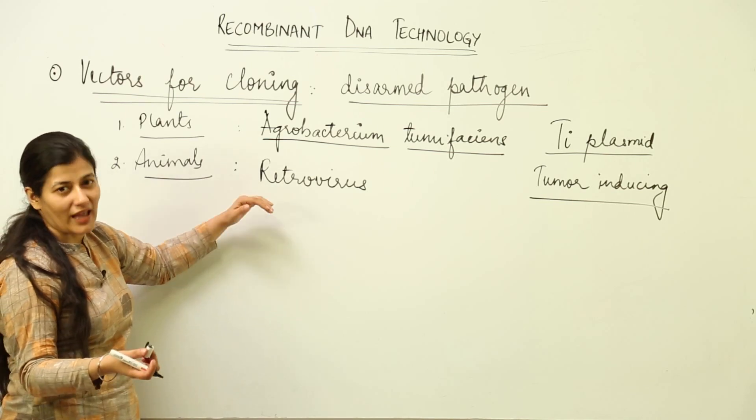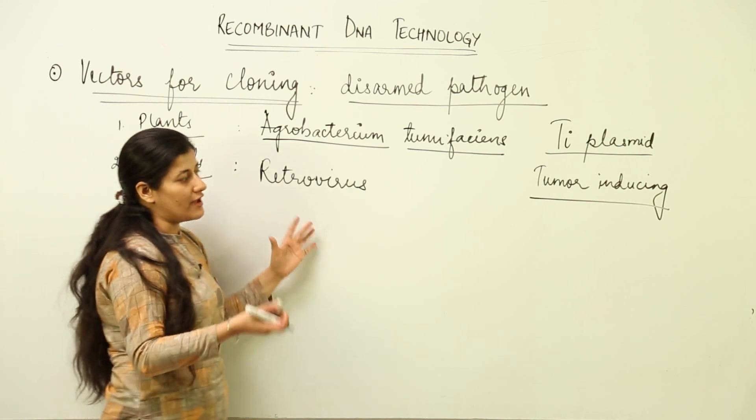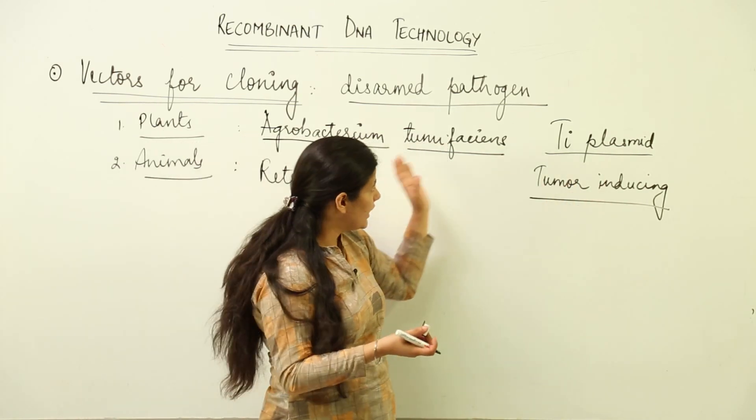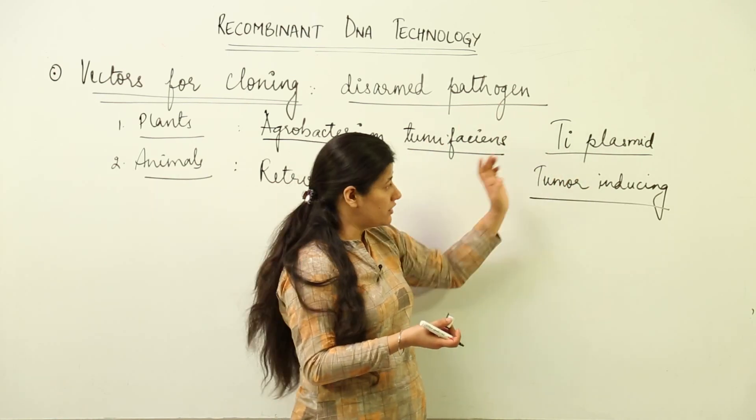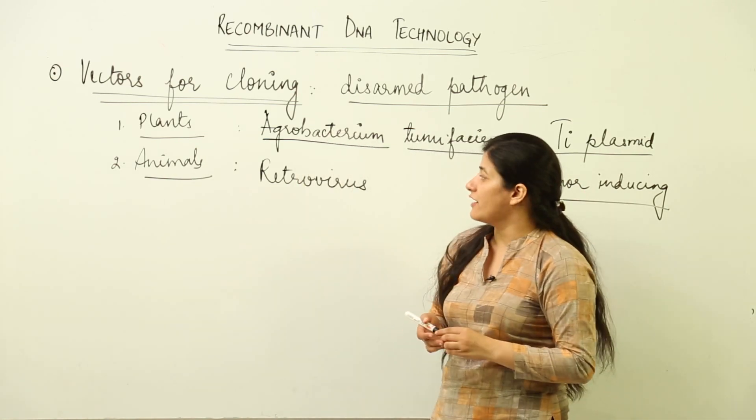So this you have to keep in mind: what Ti plasmid is, where it is found. It is found in Agrobacterium tumefaciens. We disarm this Ti plasmid, we put our gene of interest and it becomes our vector. In the same way we have the case of retroviruses where we disarm their gene which is responsible for causing the disease or which is pathogenic in nature.